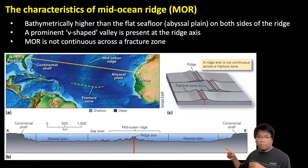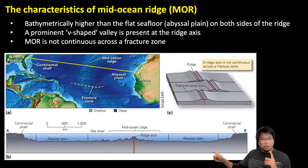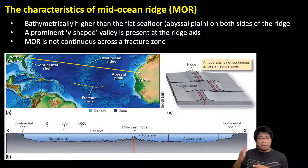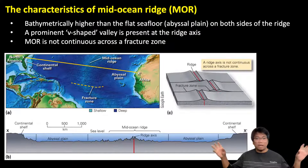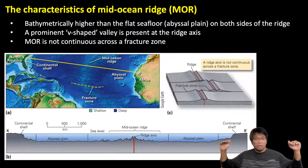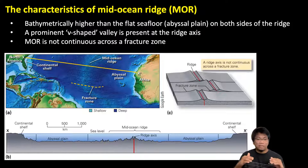I'd like to show you how the Mid-Ocean Ridge looks in cross-section. This figure is a cross-section represented by the yellow line on the map, going from the North American continent — somewhere around Florida — across the ocean basin all the way to the western part of the African continent. We have a mirror image on both sides: continental shelves in both sides of the ocean basin, then it drops down to the abyssal plain, which is the flat seafloor and covers the largest area of the ocean basins.